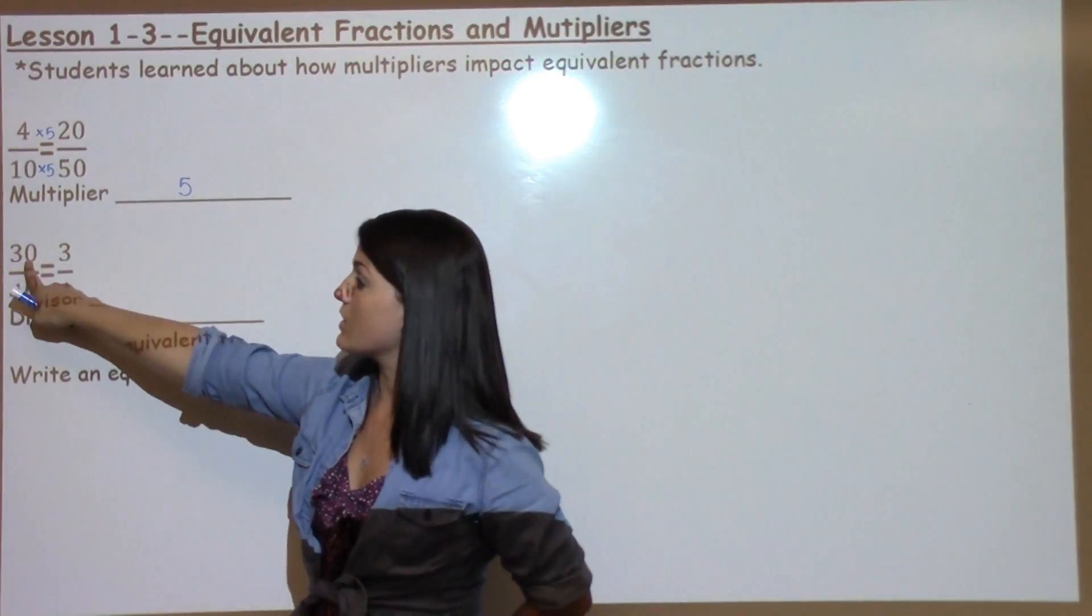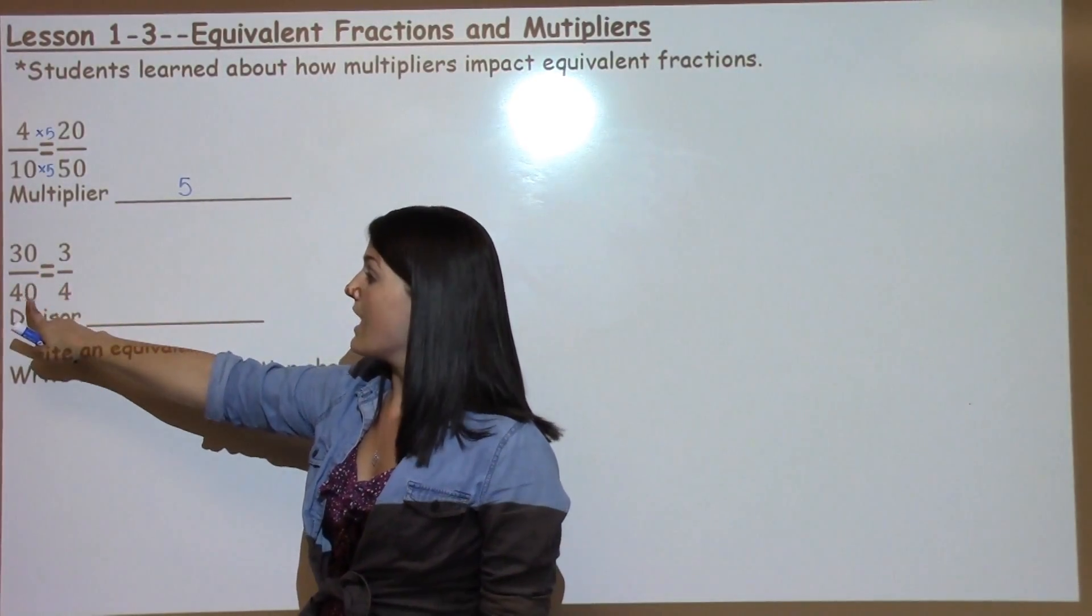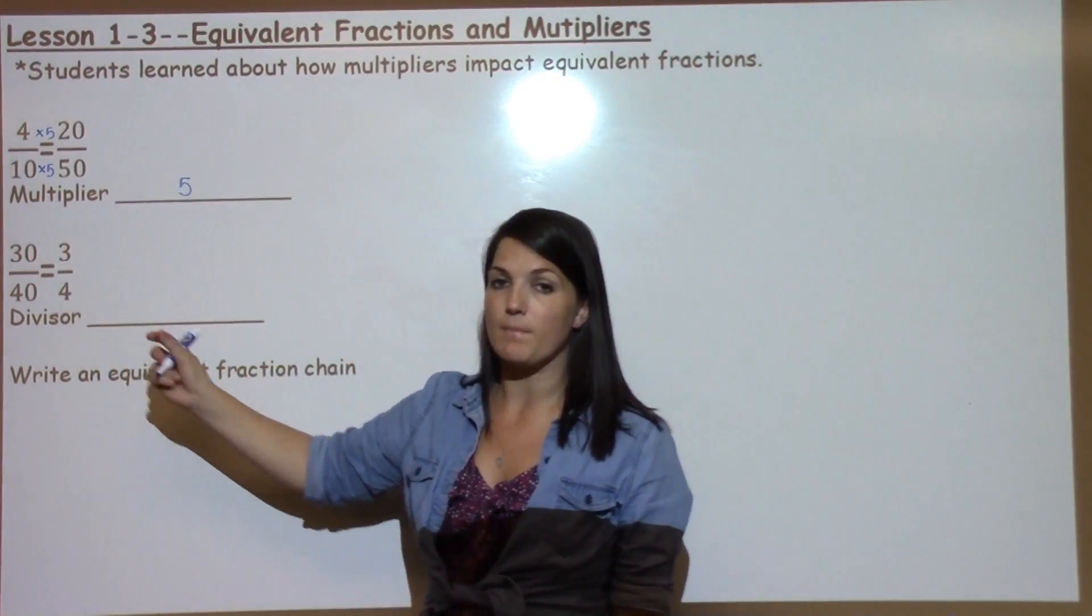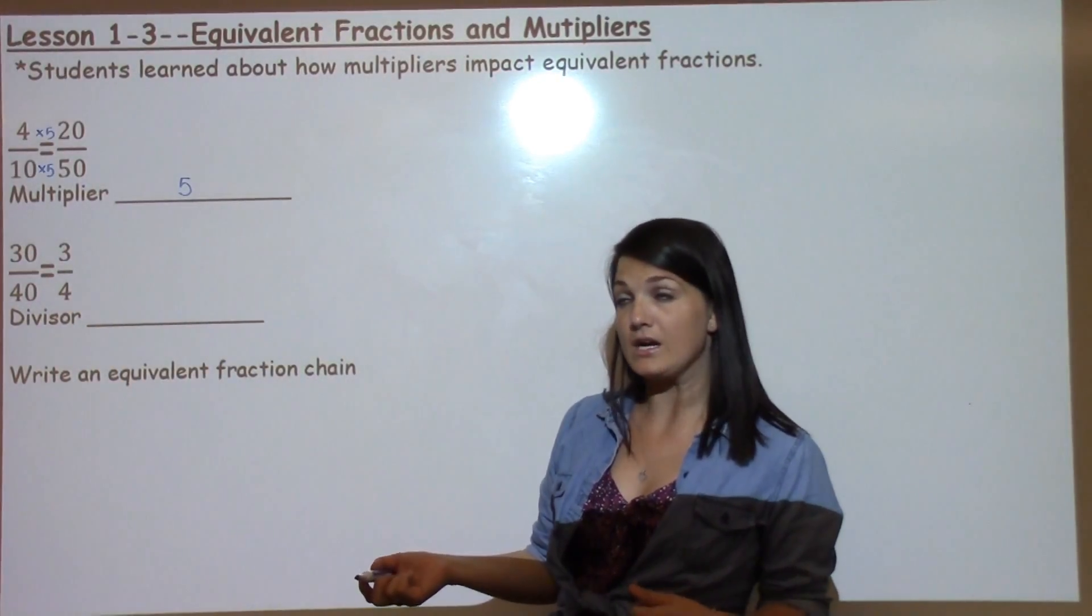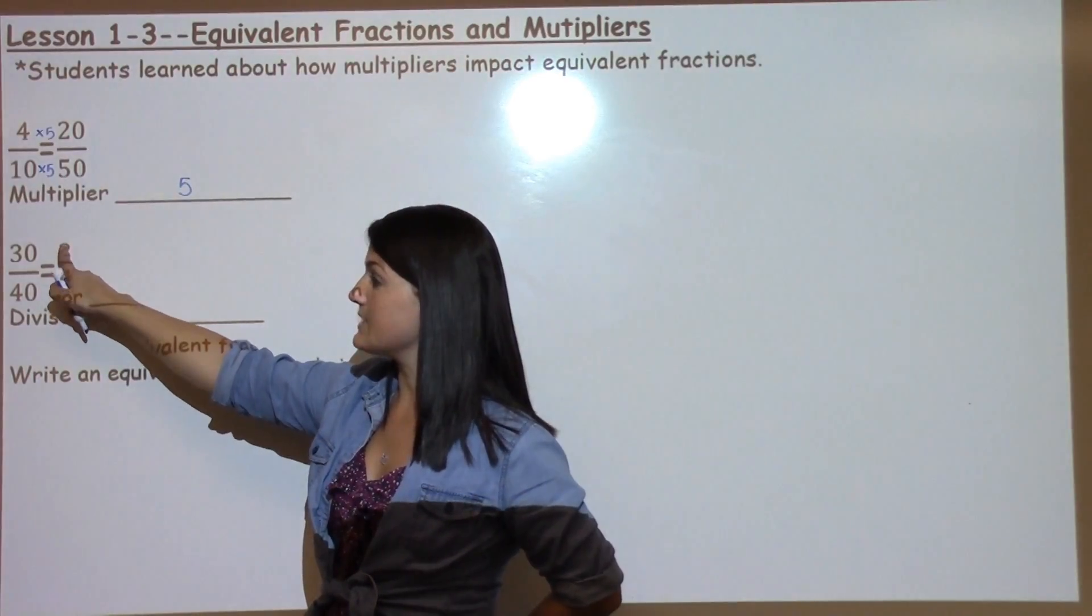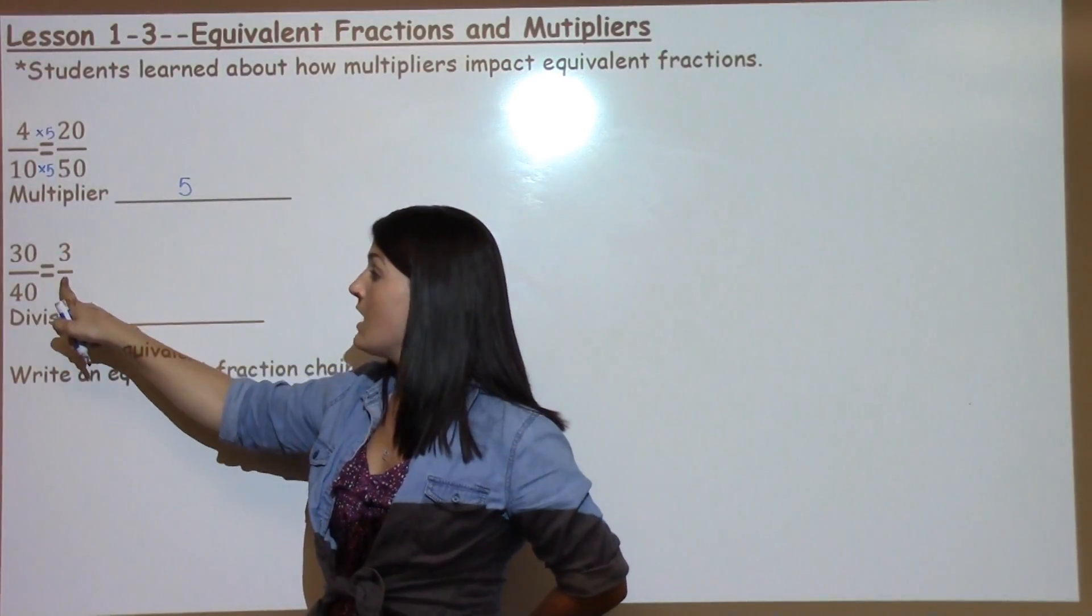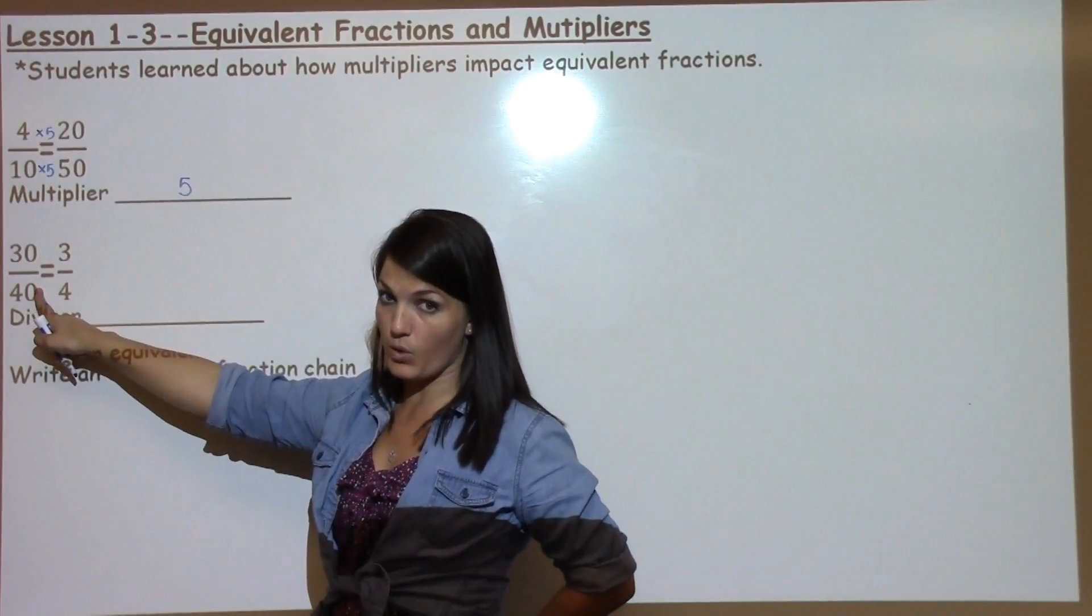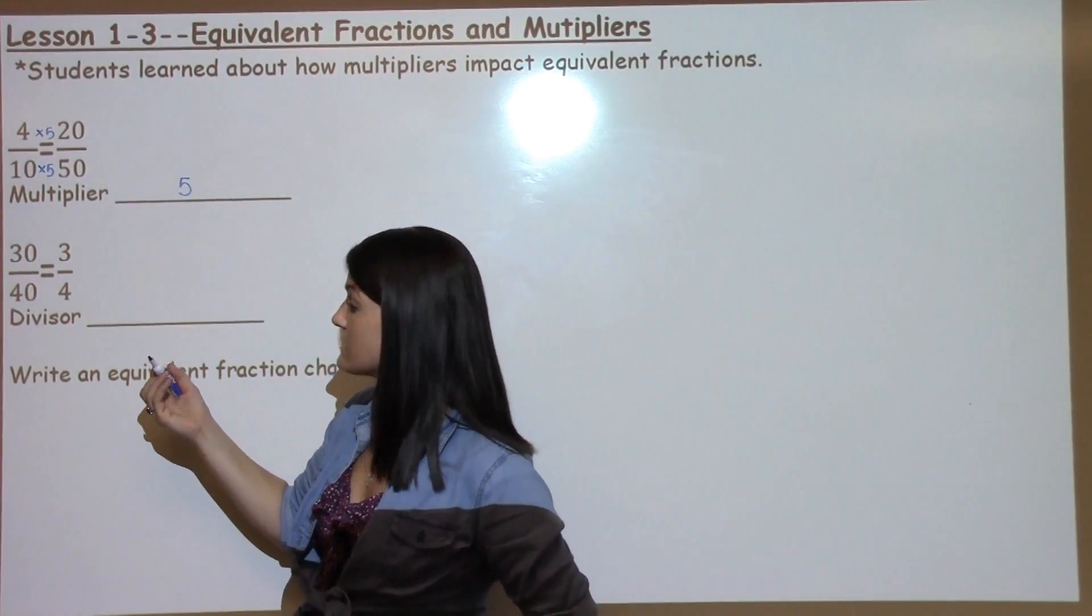We could take 30 divided by what equals 3, and 40 divided by what equals 4. Division sometimes is trickier. So another way you could think about it is working backwards and say, 3 times what gives me 30? And 4 times what gives me 40? Which is a pretty simple fact for kiddos.